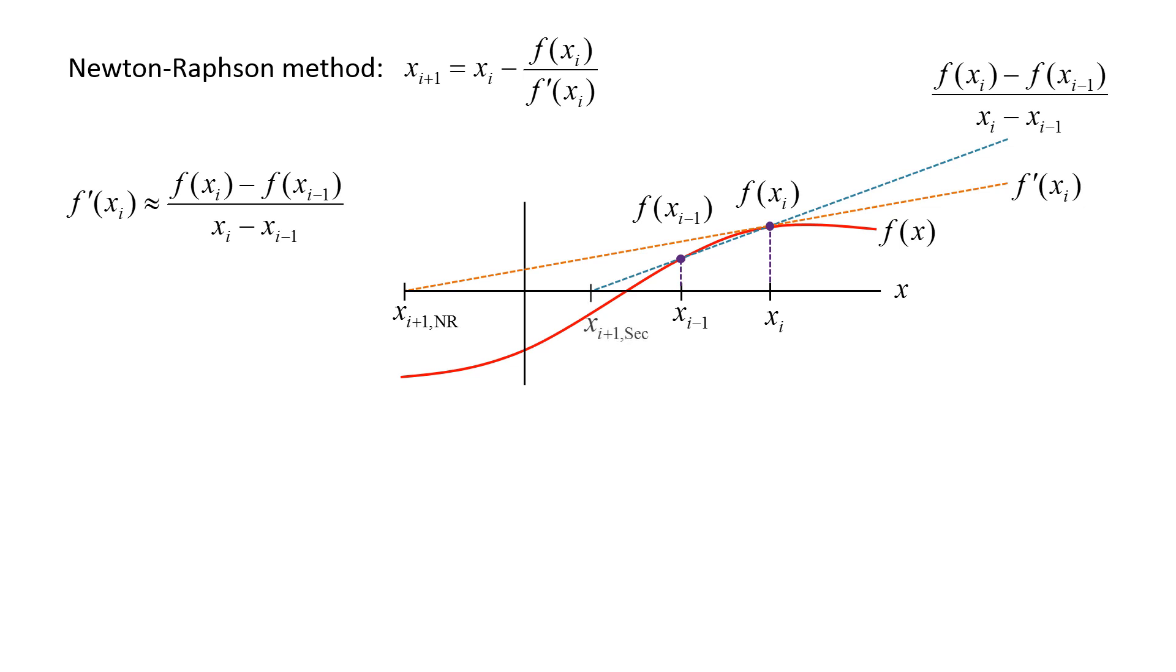We follow this line to the x-axis to determine the new root estimate, xi plus 1. Plugging the finite difference expression into the Newton-Raphson equation, we obtain the formula for the secant method.